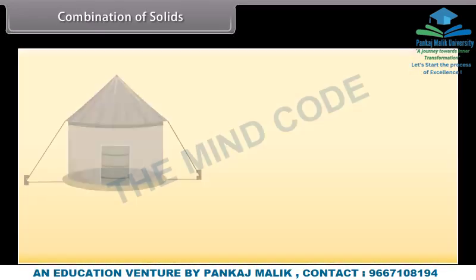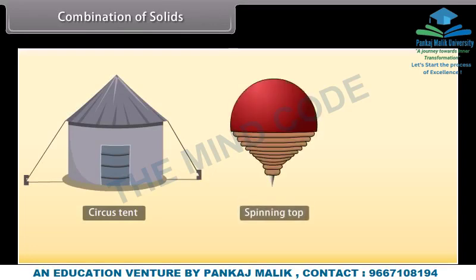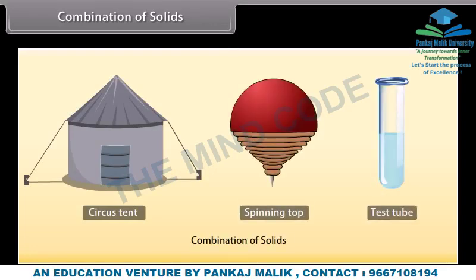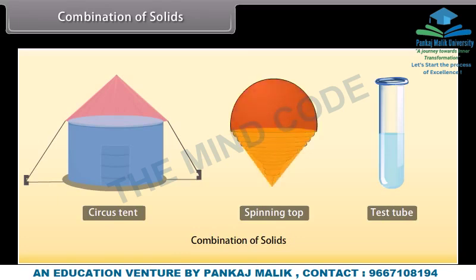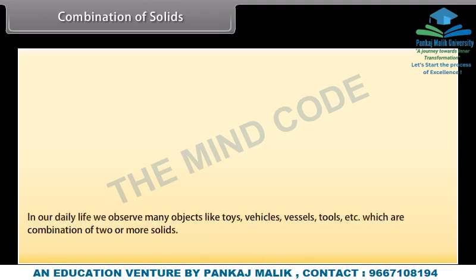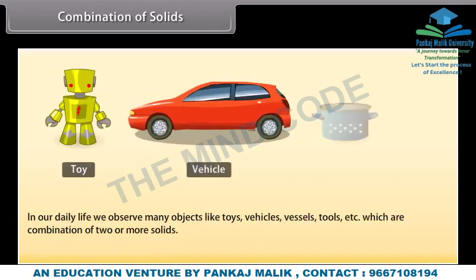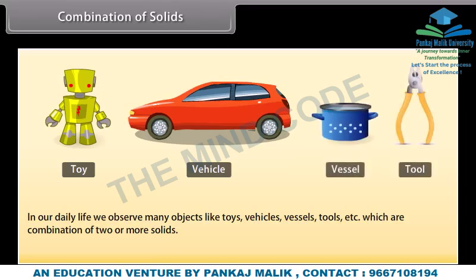Combination of solids: Students, look at these solids. These solids are made up of two or more solids. A circus tent is a combination of a cone and a cylinder. A spinning top is a combination of a hemisphere and a cone. And the test tube is a combination of a hemisphere and a cylinder. In our daily life we observe many objects like toys, vehicles, vessels, tools, etc., which are a combination of two or more solids. Let's learn to find their surface areas and volumes.